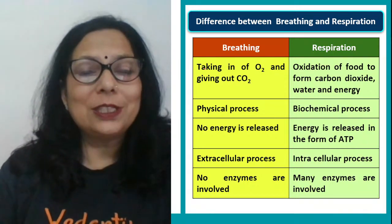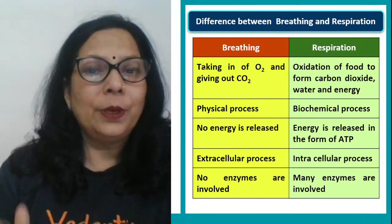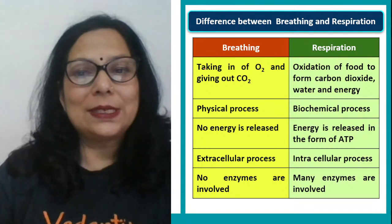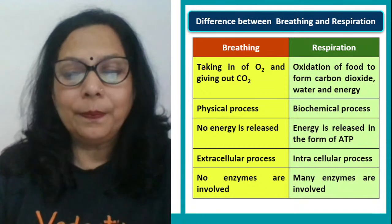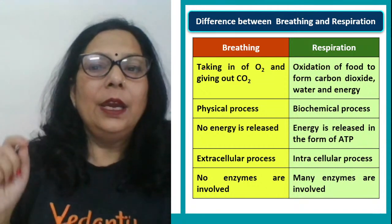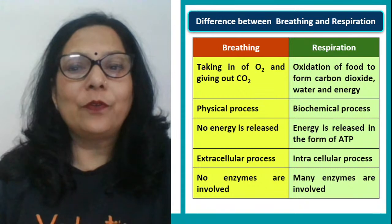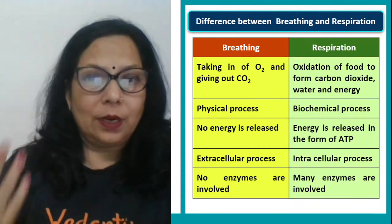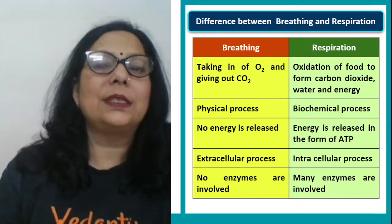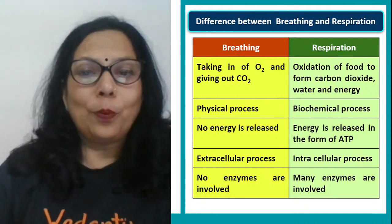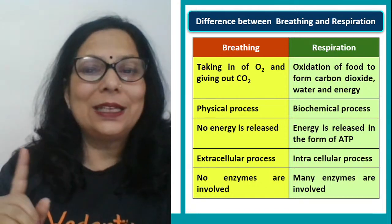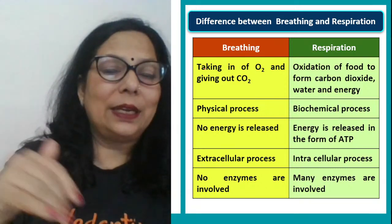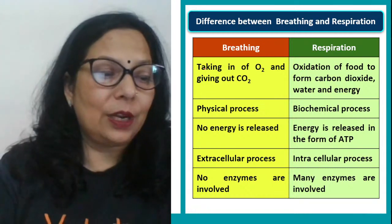Respiration is the food which is eaten by you, absorbed by the blood from the intestines after it is digested. It reaches each and every cell, then to the mitochondria. In the presence of oxygen, the food burns to give carbon dioxide, water and energy. That carbon dioxide comes back to the blood and is exhaled out through the lungs. It is a biochemical process — energy is released in the form of ATP, happening inside the cell, with many enzymes involved.